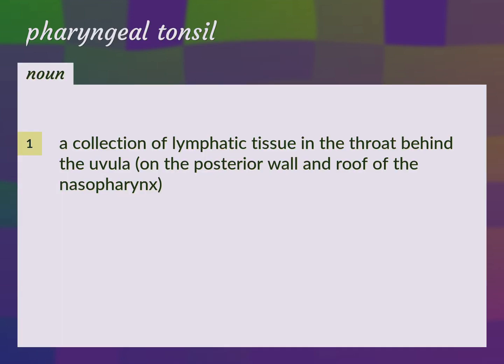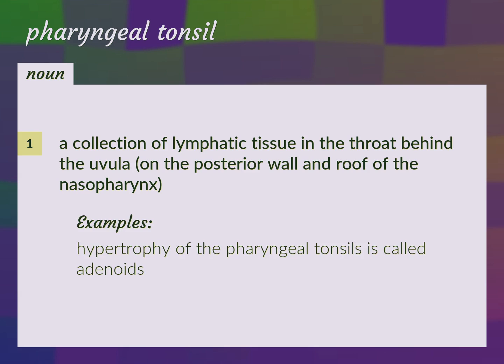A collection of lymphatic tissue in the throat behind the uvula, on the posterior wall and roof of the nasopharynx. Hypertrophy of the pharyngeal tonsils is called adenoids.